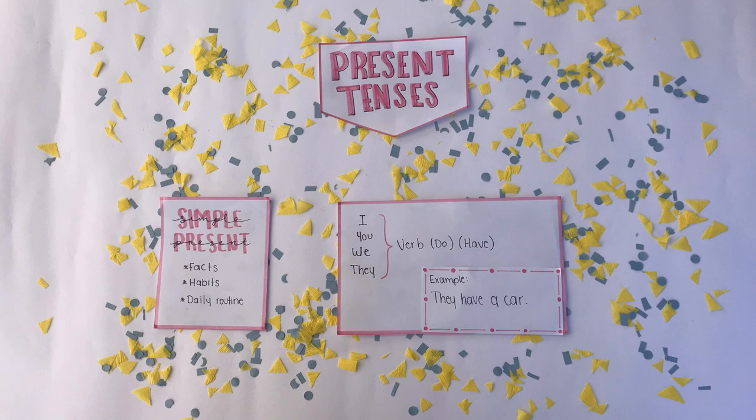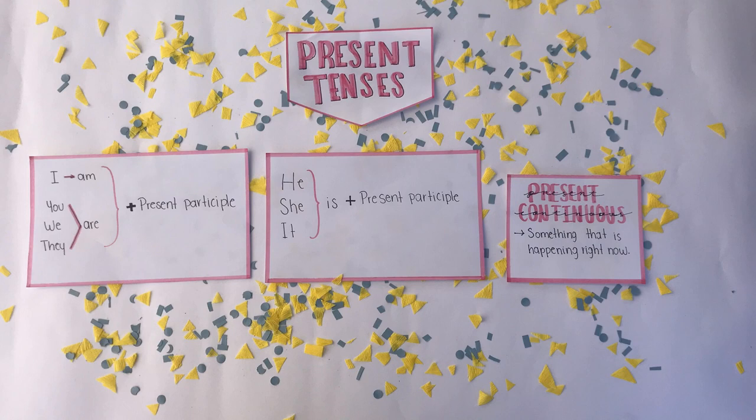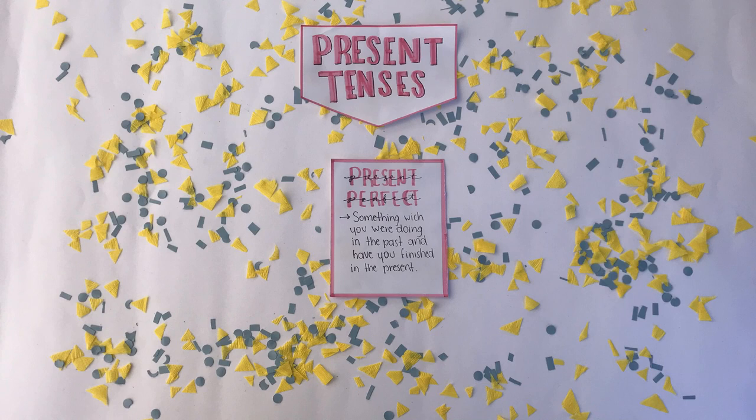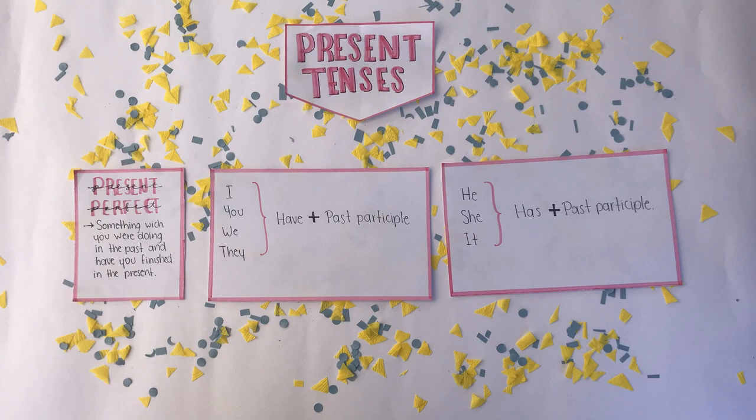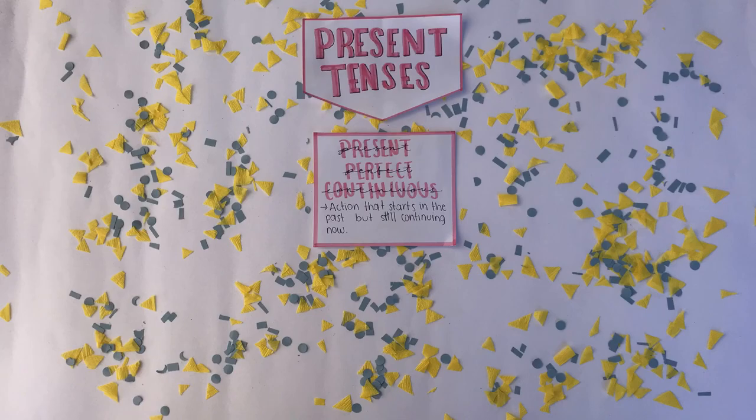Present continuous describes something that is happening right now. We use subject plus present participle — for example, he is reading now. Present perfect describes something which you were doing in the past and have finished in the present. We use subject plus past participle — for example, you have eaten pizza today.